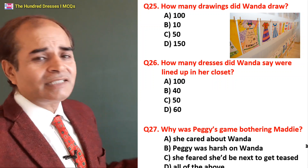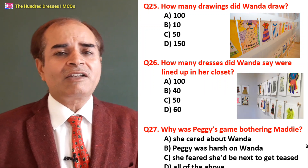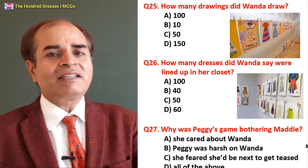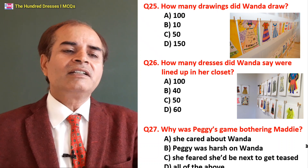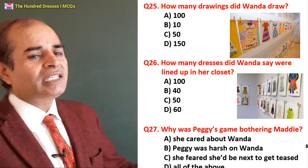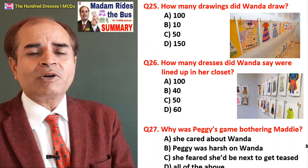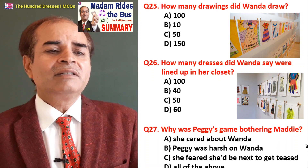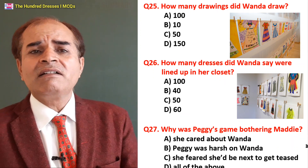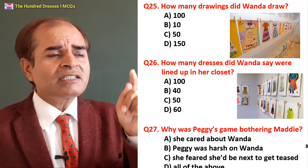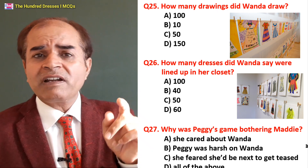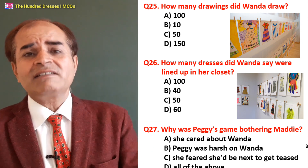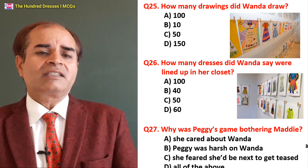Twenty-sixth question: How many dresses did Wenda say were lined up in her closet? 100 — yes, 100 dresses. Twenty-seventh question: Why was Peggy's game bothering Maddy? Because she cared about Wenda? Because Peggy was harsh on Wenda? Because she feared she would be the next one to get teased? Yes — that was the fear. C is the right answer.